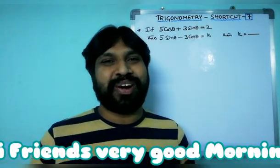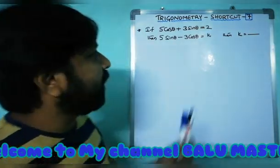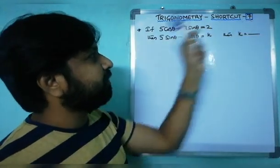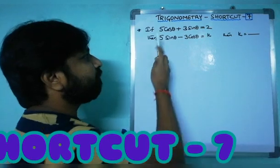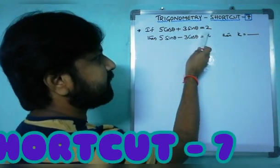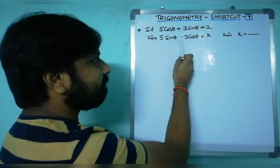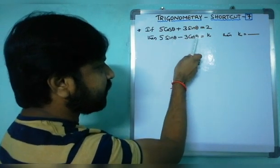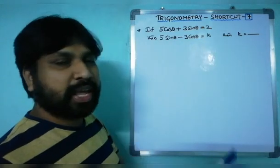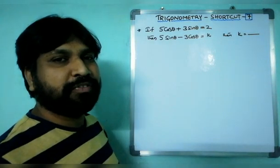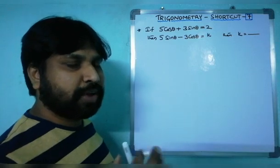Hi friends, good morning, welcome to my channel Balumaster. Today I'm going to discuss shortcut number 7 on trigonometry. The question is: if 5 cos θ + 3 sin θ = 2, then what is 5 sin θ − 3 cos θ? Its value is given as k — what is the value of k? What is the logic and method? I'll reveal the shortcut very clearly.